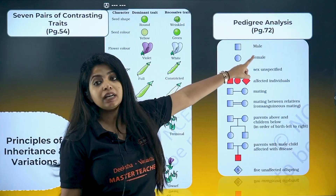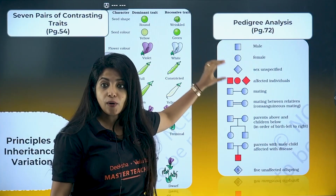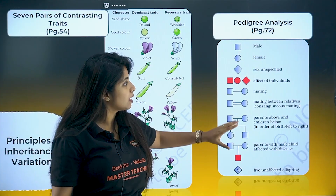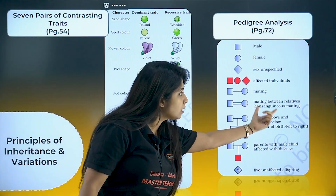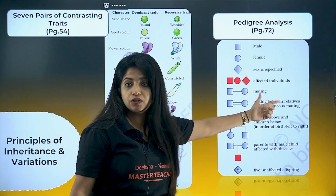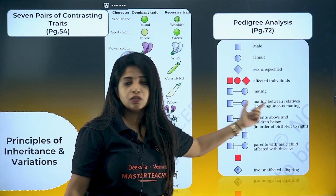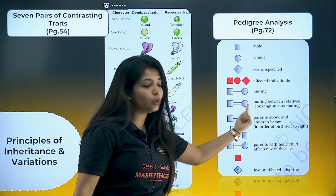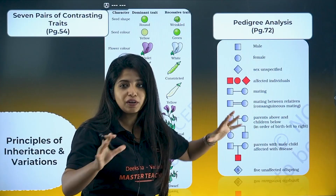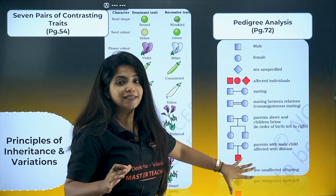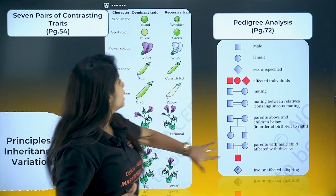This picture of pedigree analysis — all the different things — very, very important, especially the meeting between relatives, the consanguinity mating. In that, you have two lines between the male and the female. Look for it and the other things.